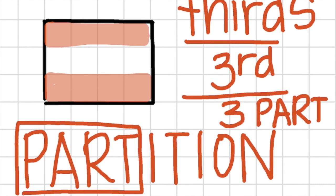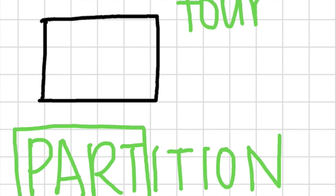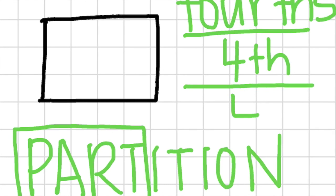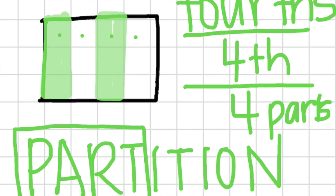Now we're going to go to another example. Going back to our big word 'partition' — here we're going to break into parts. This time we're going to partition by fourths. I see the ordinal number 'fourth,' which means four parts. So as we look at this array, we now need to shade it into fourths. We noticed that in our columns there were four of them. So if we shade one, this is a fourth, that is a fourth, and the other two white ones here and here are also fourths. So we've shaded in groups of fourths.